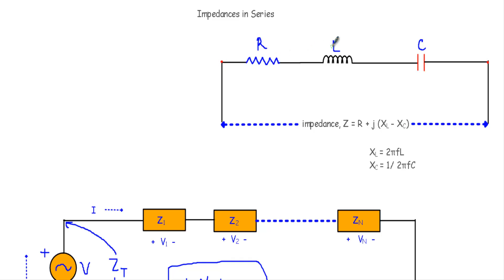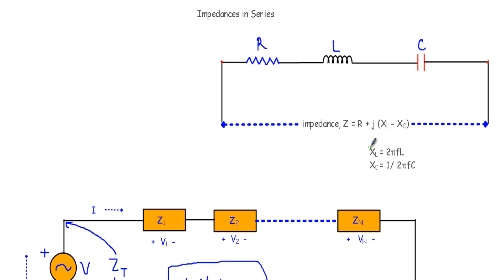Let's say in a branch we have resistor R, inductor L, and capacitor C. Therefore, between these two points, our impedance will be Z = R + j(XL - XC), where XL indicates the total opposition to current flow due to inductance and XC is the capacitive reactance. XL = 2πFL and XC = 1/(2πFC).